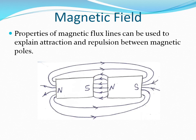Properties of magnetic flux lines can be used to explain attraction and repulsion between magnetic poles. In the diagram with the South Pole of one magnet placed next to the North Pole of another magnet, magnetic flux lines are going to be established between these two poles. Because magnetic flux lines will always try to shorten themselves, this will result in attraction between the poles and therefore between the two magnets.